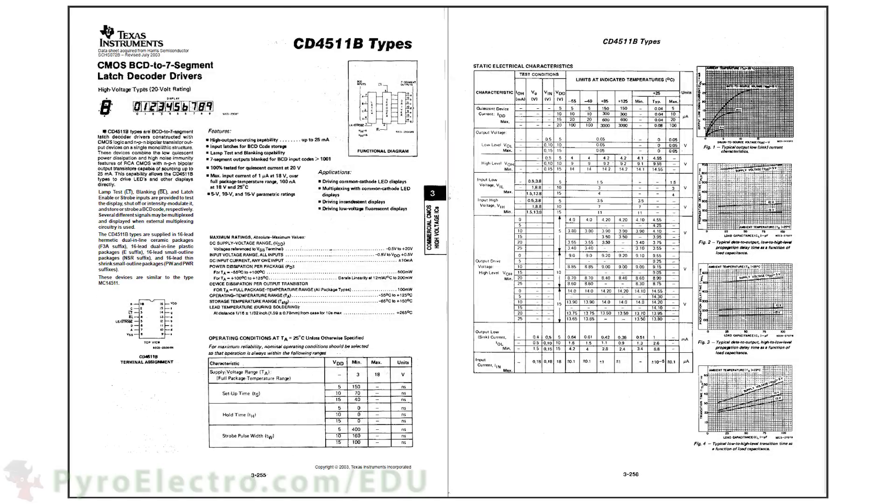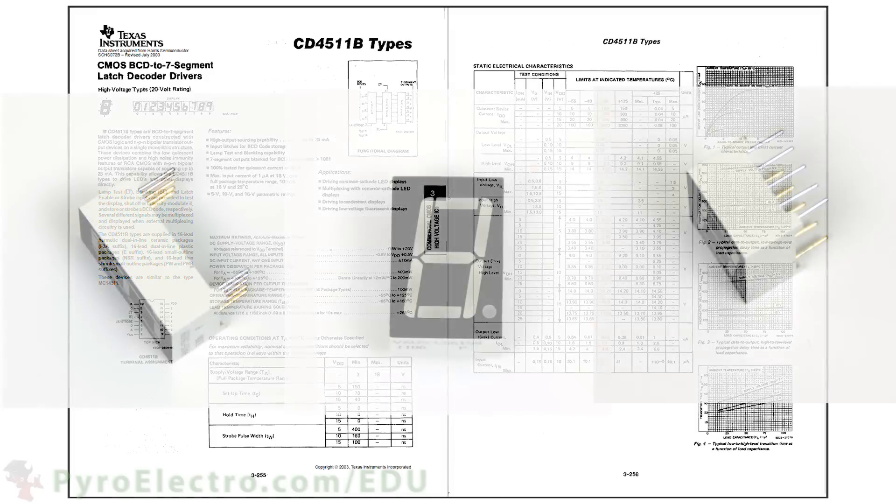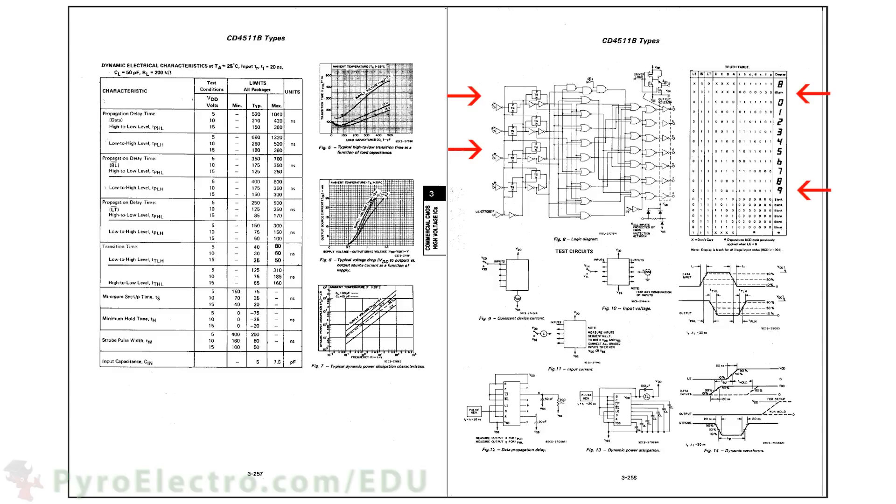The final device is the 4511. This is an IC with a sole purpose, to convert BCD into a decimal or hexadecimal value to display on a 7 segment LED display. If you're not familiar with 7 segment displays, they look like this. The 4511 logic diagram and truth table show you exactly how the BCD value is converted and what output to expect on the 7 segment LED given certain input.